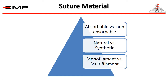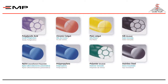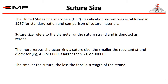Monofilament material resists infection better but has significant memory, which makes it less handy. In contrary, multifilament materials, although they can easily host bacterial spores, have less memory which makes them more handy. The most commonly used absorbable suture material is polyglycolic acid or Vicryl, which is a synthetic multifilament material. The most commonly used non-absorbable suture materials are silk, which is a natural multifilament material, and polypropylene or Prolene, which is a synthetic monofilament material.